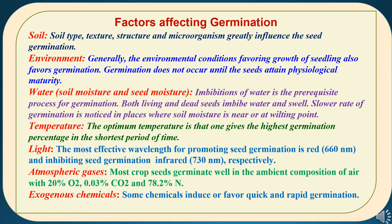The fourth factor is temperature. The optimum temperature is that which gives the highest germination percentage in the shortest period of time. The fifth factor is light. The most effective wavelength for promoting seed germination is red light, having a wavelength of 660 nm, while infrared light at 730 nm inhibits seed germination. Red light increases germination and blue light inhibits germination.